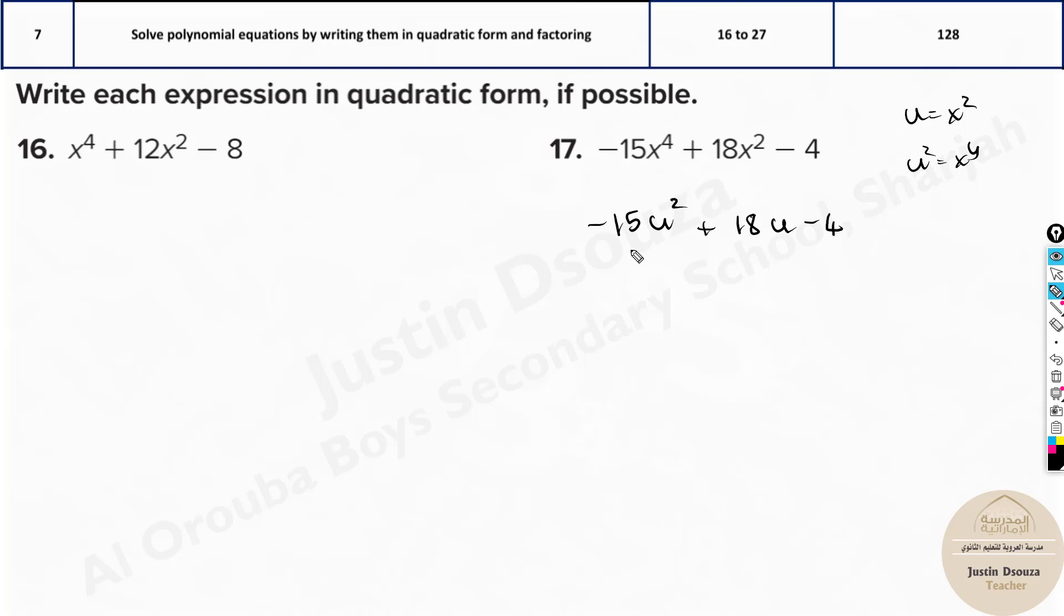And now what is this u value? So let this square be. Now this is in quadratics. All I will do is instead of u, I will substitute x². Then power 2. Plus over here 18, what is u? x² minus 4. This is the quadratic form.